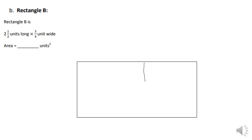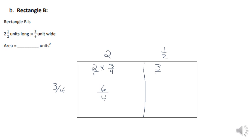The next problem has dimensions two and a half units by three-quarters. I'm going to split my rectangle — this side is two and one-half, and the other dimension is three-quarters. So the first part is two times three-fourths, which equals six-fourths. The next part is three-fourths times one-half, which gives me three-eighths.